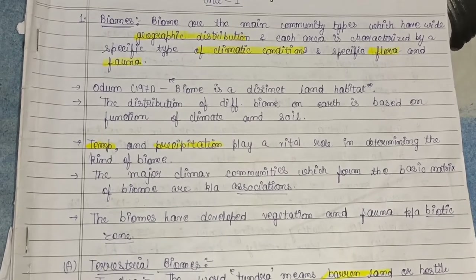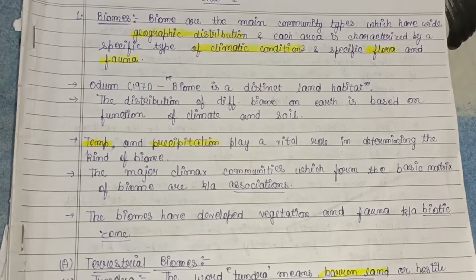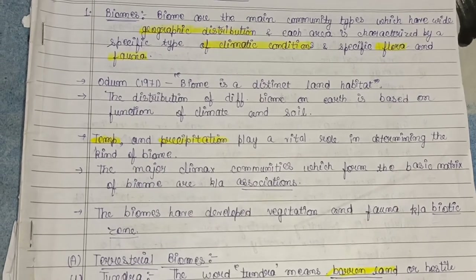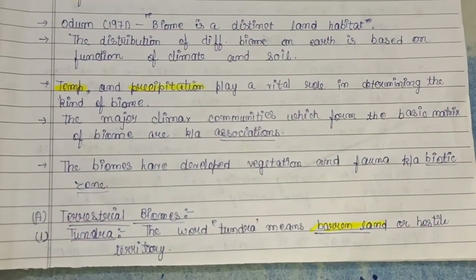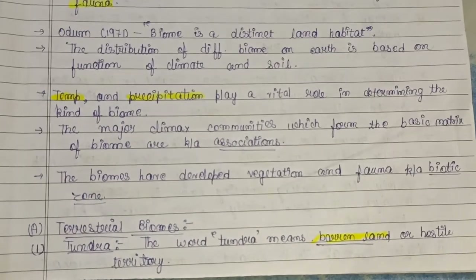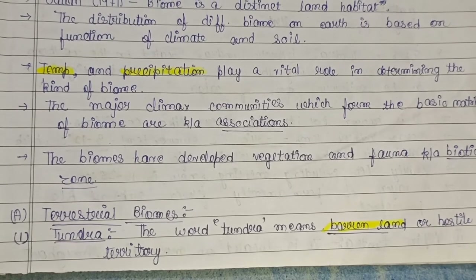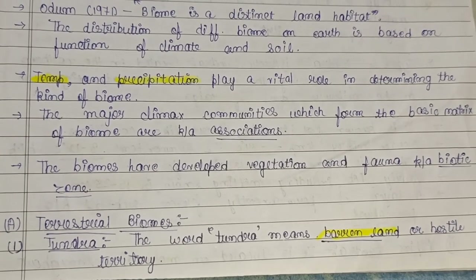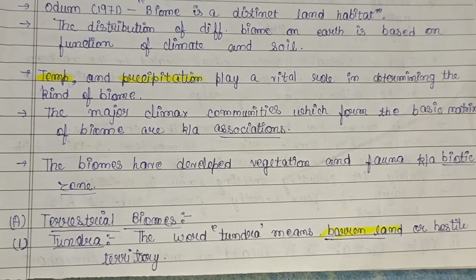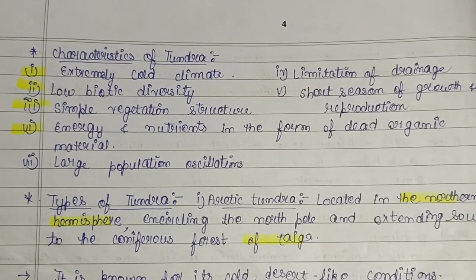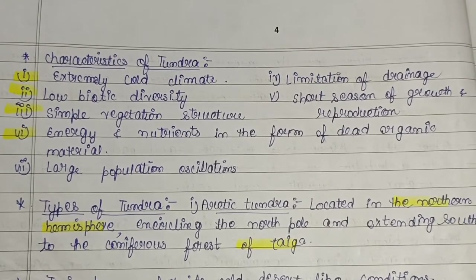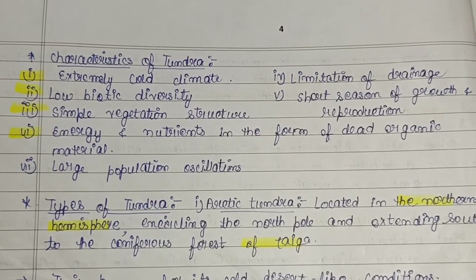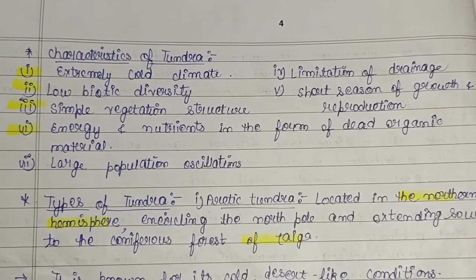Biomes with developed vegetation and fauna are known as the biotic zone. We will now start with terrestrial biomes, and today's topic is the tundra biome. The word tundra means a barren land or a hostile territory. Characteristics of a tundra biome include: extremely cold climate and low biotic diversity — that is, of flora and fauna — because there are limited temperature and climatic conditions for organisms to adapt.